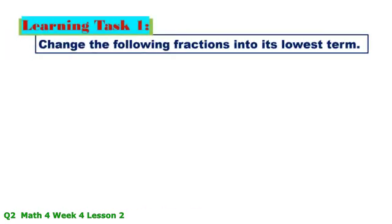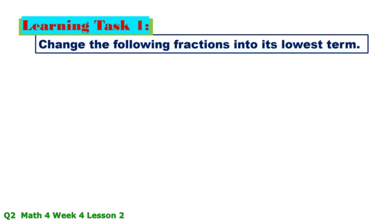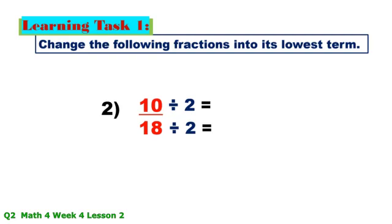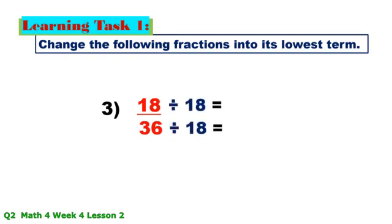Learning Task 1: Change the following fractions into their lowest term. Number 1: 9/12 — GCF is 3; 9 ÷ 3 = 3, 12 ÷ 3 = 4. Number 2: 10/18 — GCF is 2; 10 ÷ 2 = 5, 18 ÷ 2 = 9. Number 3: 18/36 — GCF is 18; 18 ÷ 18 = 1, 36 ÷ 18 = 2, answer is 1/2.